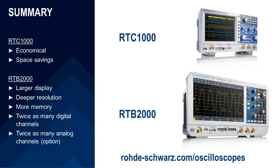So in summary, both the RTC and the RTB are great devices for basic scope needs. The RTC packs a punch for such a small machine, perfect for home labs and in the classroom. The RTB brings a larger display, greater resolution, greater memory, an option for two additional input channels, and extra ability in the way of data capture and analysis. For more on our oscilloscope line, visit rohde-schwarz.com/oscilloscopes. Thanks for watching.